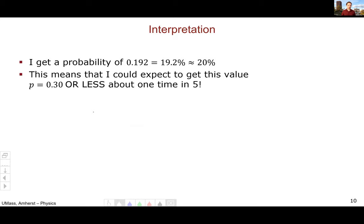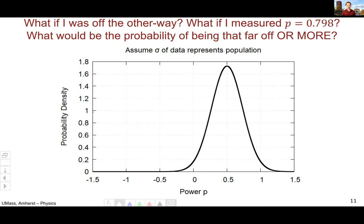Now, maybe your result isn't less than 0.5. Maybe your result's a little bit bigger than 0.5. So what if instead of 0.3, I measured closer to 0.8? What would be the probability of being that far away from the true answer of 0.5 or more? So now my measurement is this 0.798. And I want to know what's the probability of getting that number or any measurement bigger than that number. So graphically, we're looking at this area here under the bell curve. So everything from our measurement all the way up to positive infinity.